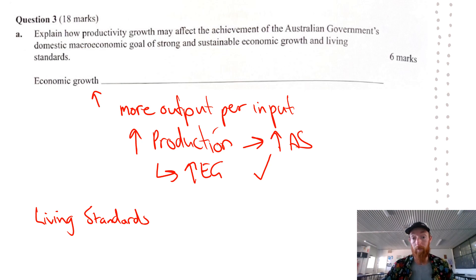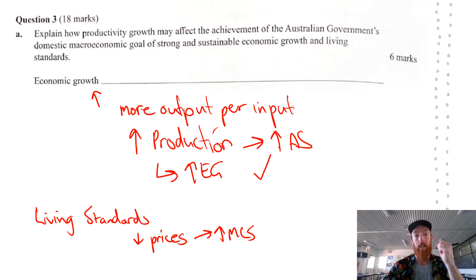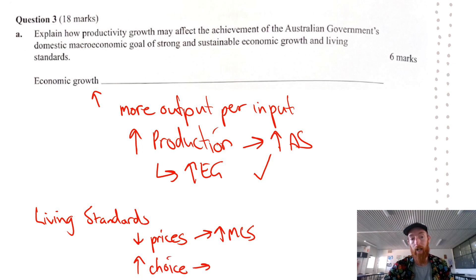For living standards, with more output per unit of input, we talk about how it impacts material and non-material living standards. Productivity growth may lead to lower prices if increased efficiency is passed on through decreased cost inflation, increasing material living standards. It could lead businesses to invest, expand, employ more people, decreasing unemployment and increasing material living standards. For non-material living standards, talk about increased choice or satisfaction and less stress about the future. Cover those things and you should get the six marks.